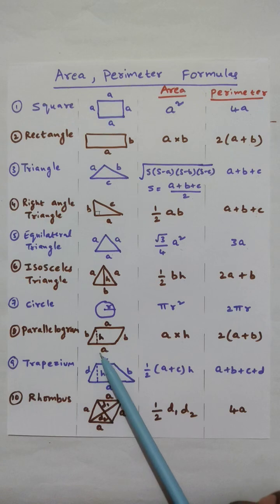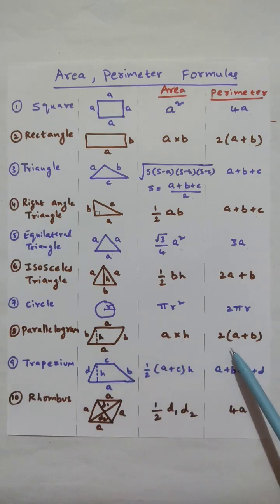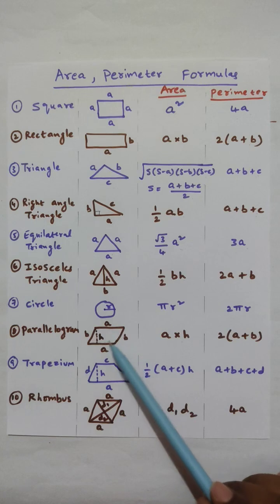Area of a parallelogram is base A into height H. Perimeter is 2 into A plus B.